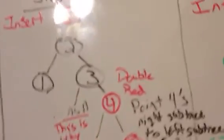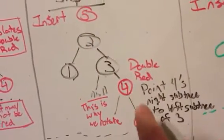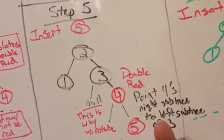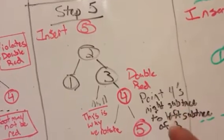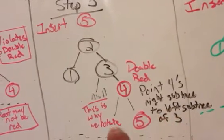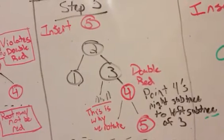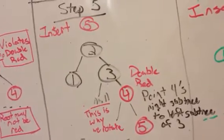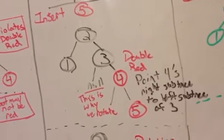Let's go to step 5. Step 5, when we insert 5, we get, again, a double red. So, what we need to do is a rotation, and that rotation needs to happen because this black is a null, or the null is a black, so we can't just move the 4 right up to 3. So, we need to do that rotation.